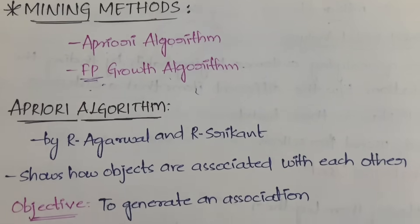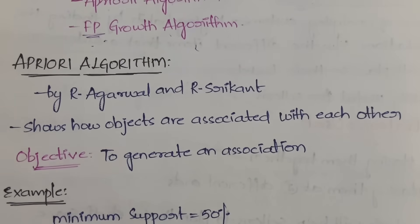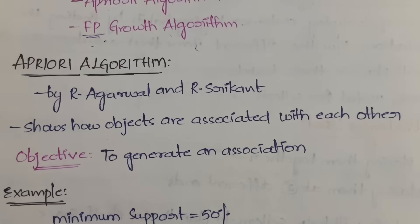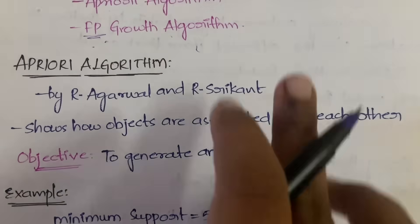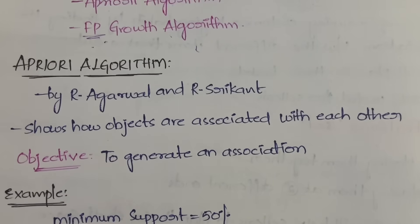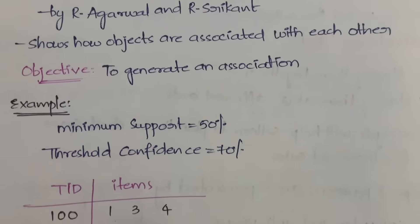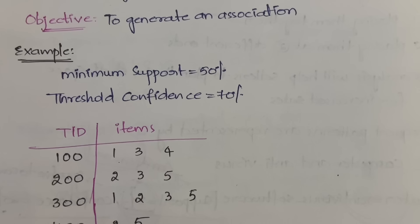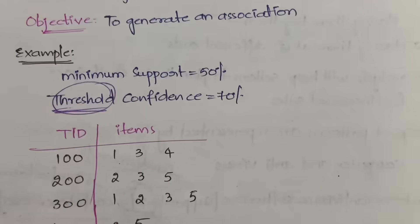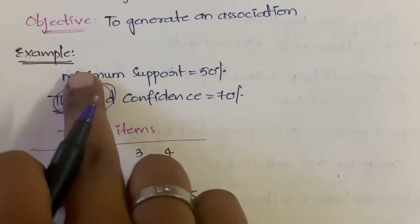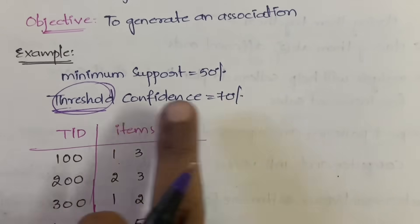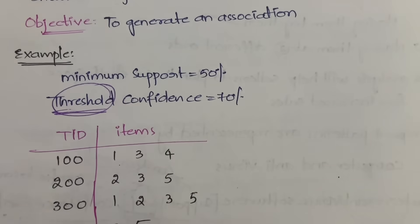The Apriori algorithm was given by R. Agarwal and R. Srikant. It shows how objects are associated with each other — that is, the relationship between objects. Our objective is to generate association rules. Before starting, we need to define the minimum support threshold and minimum confidence threshold. We have taken minimum support as 50% and threshold confidence as 70%.